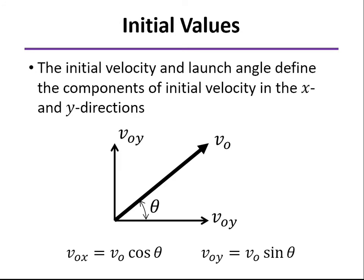Now a lot of problems will give you the initial velocity and the launch angle, and from that you divide that into components to have the initial velocity in the x direction and the initial velocity in the y direction with the cosine and sine as shown here.